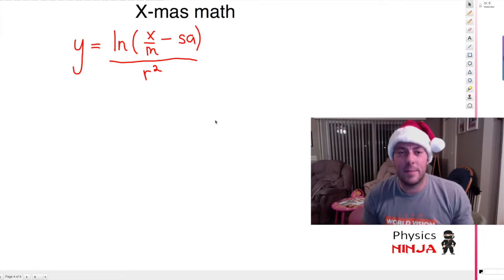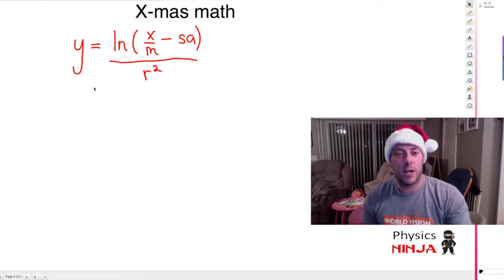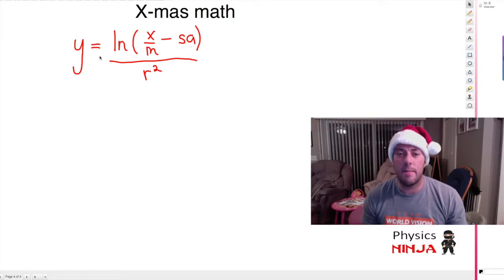Hi everybody! Today I'm going to do a little Christmas math for you. I'm going to start with this expression: Y equals the natural log of X over M minus S times A, divided by r squared. So let's try to simplify this expression.